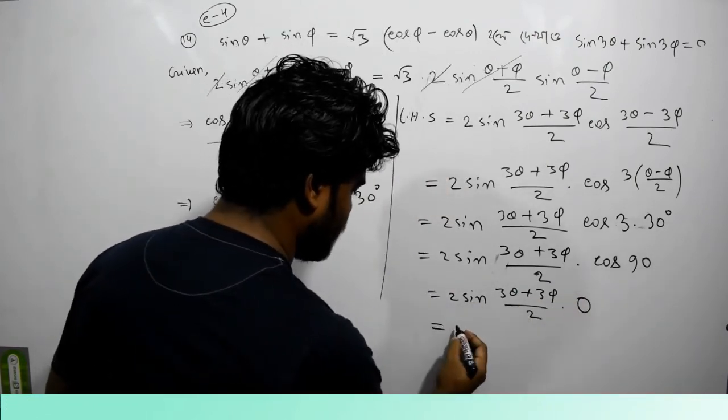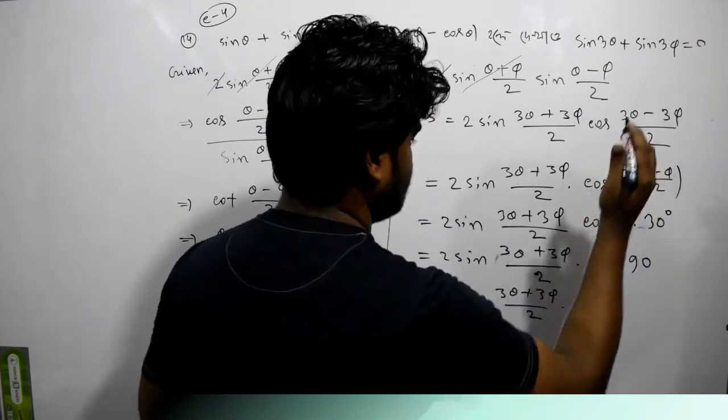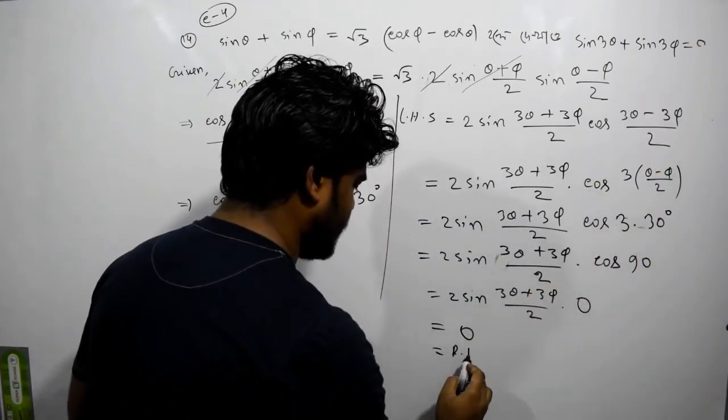So 0 equals 0, which is the right hand side.